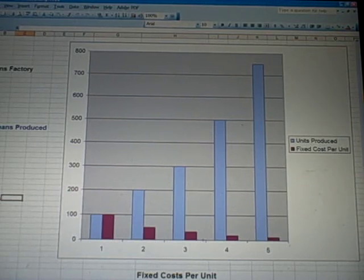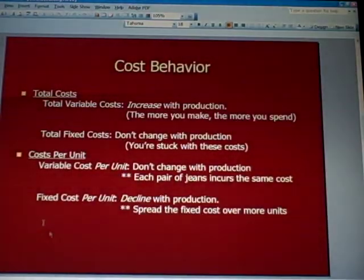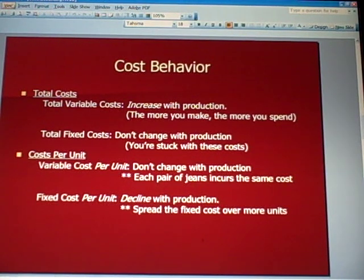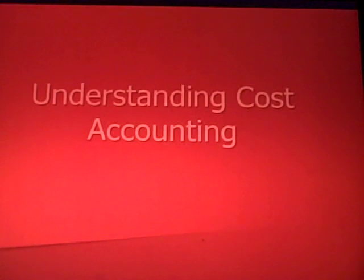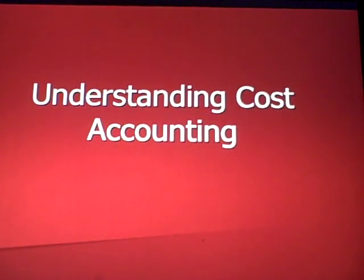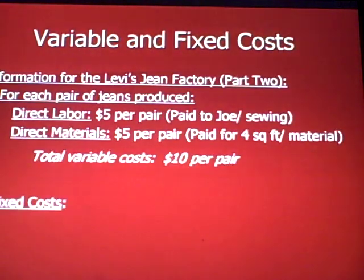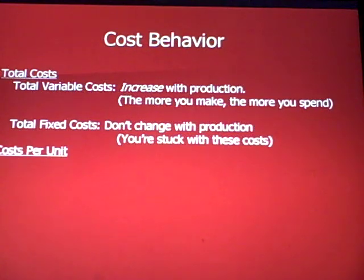If we look at fixed cost per unit at the Levi's jeans factory, the fixed cost per unit goes down as we produce more, because we are spreading the fixed cost over more jeans. That's what we mean graphically. Let's go back to our PowerPoint slide.